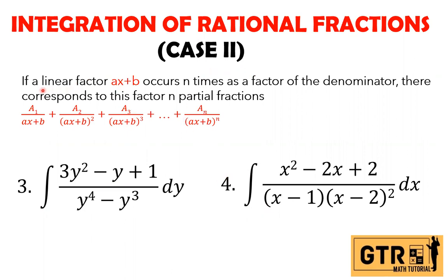Case number 2: if a linear factor ax plus b acquires n times as a factor of the denominator, there correspond n partial fractions. So we have A₁ over (ax+b) plus A₂ over (ax+b)² plus A₃ over (ax+b)³, and so on up to Aₙ over (ax+b)ⁿ. If the exponent is 5, we have 5 partial fractions; if cube, we have 3 partial fractions.